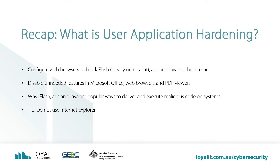The Essential 8 tells us we need two things: configure web browsers to block Flash — ideally uninstall it — Ads, and Java on the internet. Disable unneeded features in Microsoft Office, web browsers, and PDF viewers.